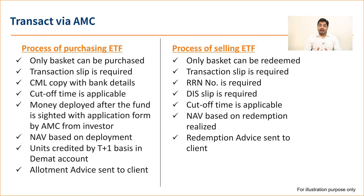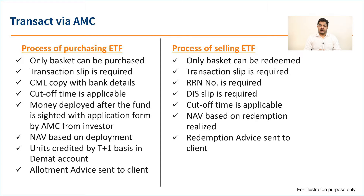If you want to buy the basket size, simply fill in the application form, transfer the money into the fund account, and the AMC will create fresh ETF units for you by deploying that money in the underlying market. For example, for Nifty 50 ETF, the AMC will buy all 50 stocks in the same proportion, and whatever new units are created will be credited in your DMAT account — on the same day or typically on a T+1 basis.